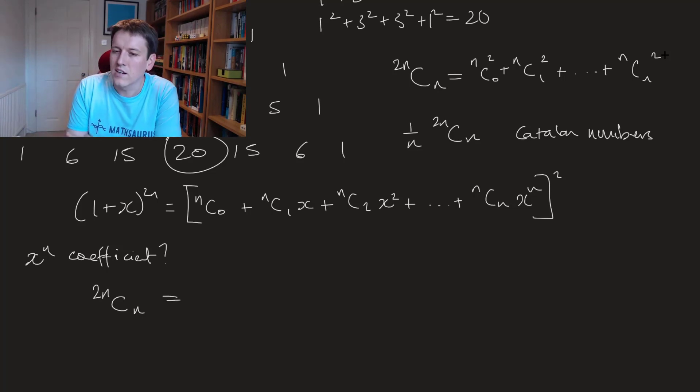And the x to the n coefficient on the right hand side here, well if you imagine multiplying this whole expression by itself I will get an x to the n term when I multiply the constant term by the x to the n term and that will be n choose 0 times n choose n. I'll get one from multiplying the x term by the x to the n minus 1 term so I'll have n choose 1 times n choose n minus 1.